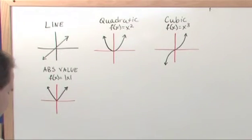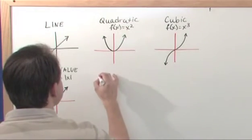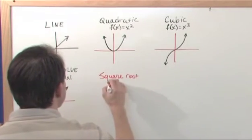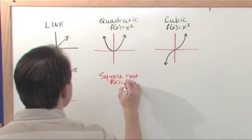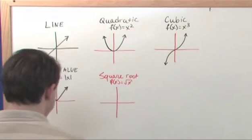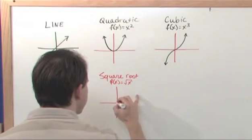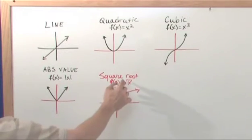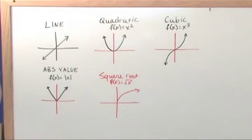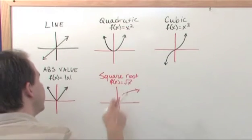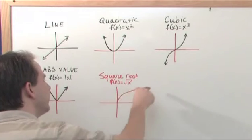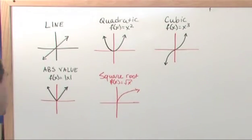The next one I want to talk to you about is the square root — f(x) = √x. If this was your graph, then your square root would start here at zero and it would bend over like this. The reason it starts at zero is because if you put negative values in for x, you get imaginary numbers because you can't take the square root of a negative and get a real number back. So your square root starts here and it just bends over.